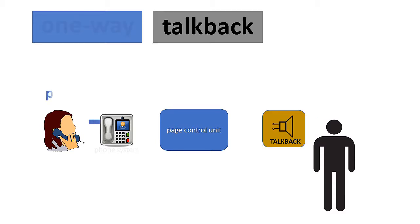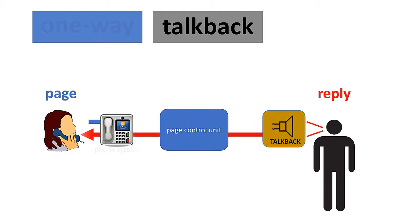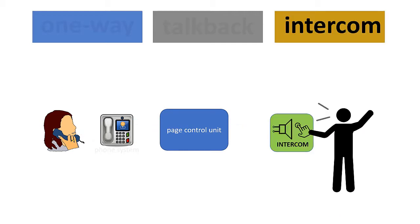Talkback is a two-way conversation that can only be initiated by one party and allows the second party to reply to the originator through the paging system. Intercom is also a two-way conversation, but it can be initiated by either party through the paging system.